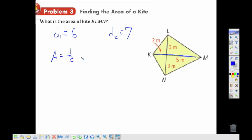And so my area using my formula would be one half of my diagonal one, which is 6, times diagonal two, which is 7, which gives me 3 times 7, or 21. Keep our units here as meters squared.